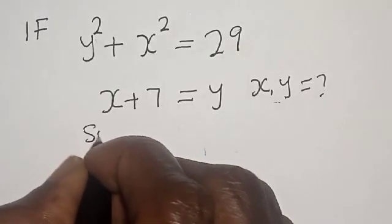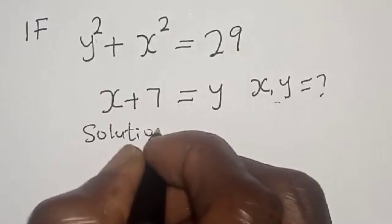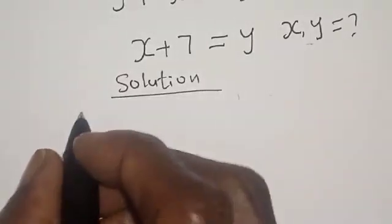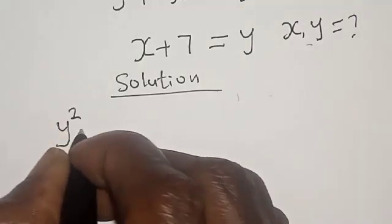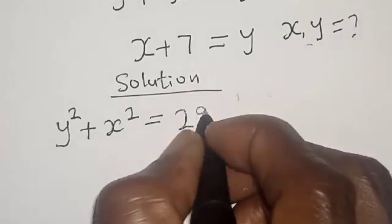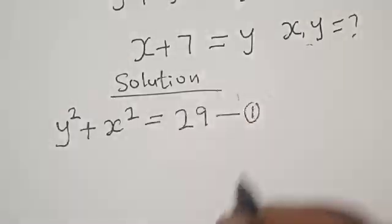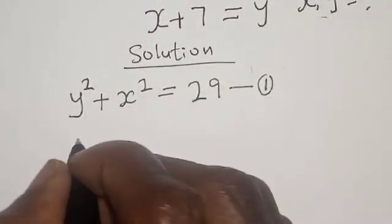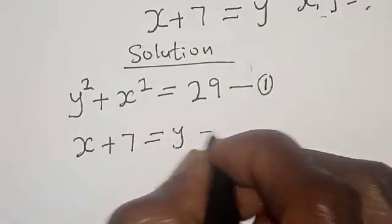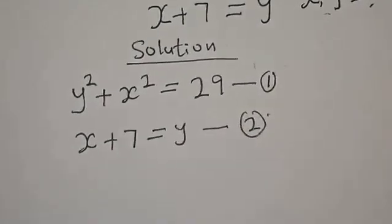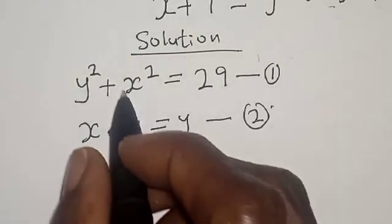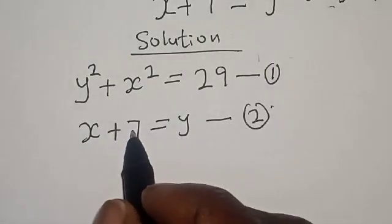Solution. We have the given equation: y squared plus x squared is equal to 29 — let's call this equation 1. Then we have x plus 7 is equal to y — this is equation 2. Now, let's substitute equation 2 into equation 1, that is, y is equal to x plus 7.